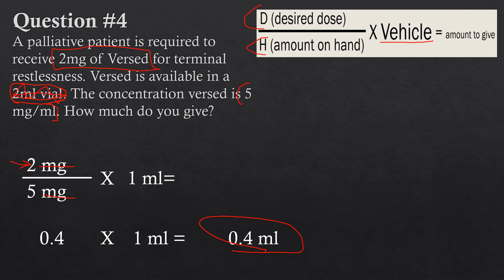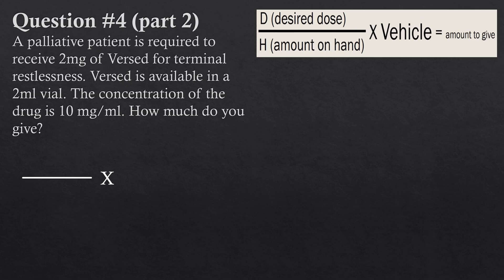I added a part two to this question just to prove a point. It's very similar: a palliative patient is required to receive 2 milligrams of Versed for terminal restlessness. Versed is available in a 2 milliliter vial, but the concentration is now 10 milligrams per mL. The only thing that's changed is the concentration — and as we discussed, the vial size is not relevant. The desired dose D is still 2 milligrams on top.